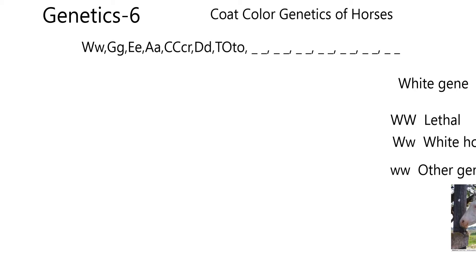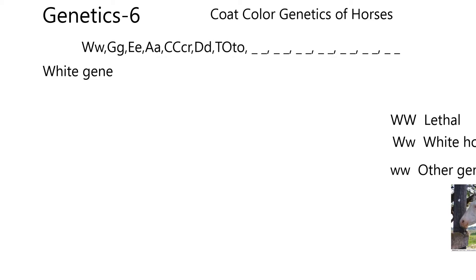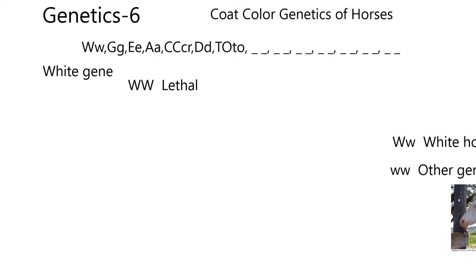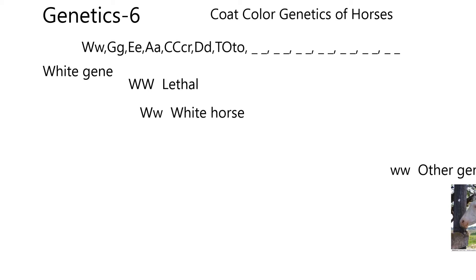Starting on the far left of this genotype is the W, the white gene. If the genotype of the foal — or the embryo, I should say — is W/W (homozygous dominant), that embryo will die in utero. This is called lethal white. There are other things like overall white, but W/W is a lethal genotype.